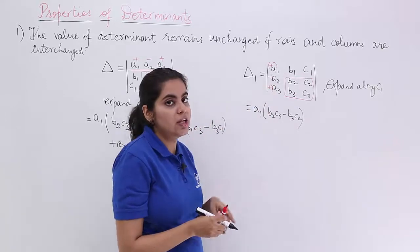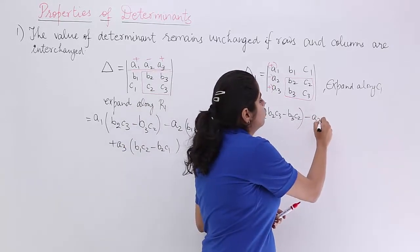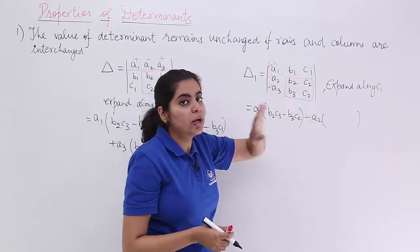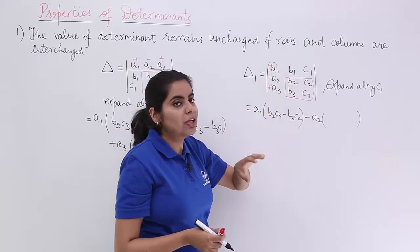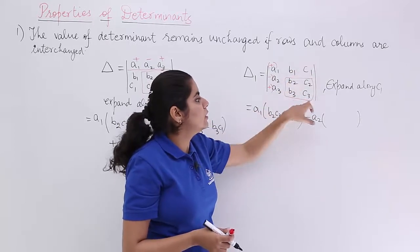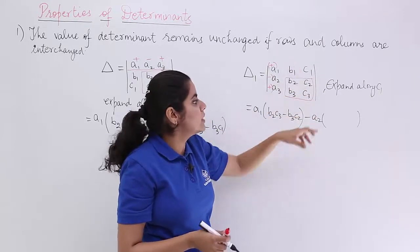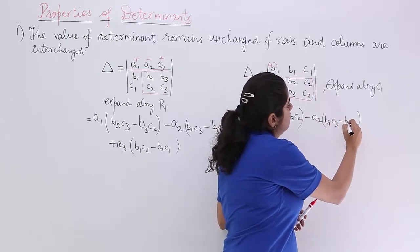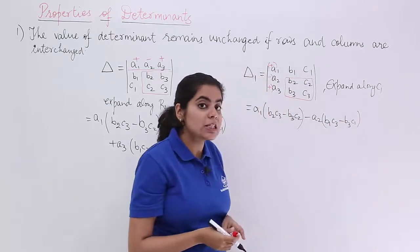Now, you have minus a2. So, you write minus a2. In the bracket, what is there? Second row, ignore. First column, ignore. Left b1, c1, b3, c3. Cross-multiply. b1c3, so it is b1c3 minus b3c1.